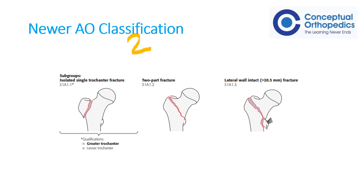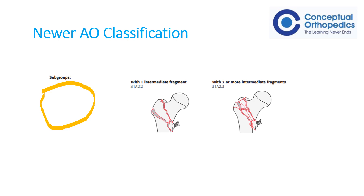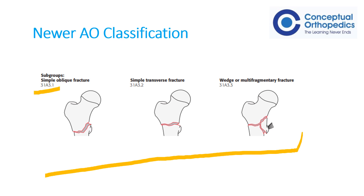The 2018 refined AO classification considers: 31-A1.1 as an isolated fracture of the greater or lesser trochanter; 31-A1.2 as a two-part fracture with a single fracture line; and 31-A1.3 as one fracture line plus a separate lesser trochanter fracture. In A2, there is no A2.1; A2.2 is one fracture line with one intermediate fragment; A2.3 has two or more intermediate fragments. A3 is a reverse oblique fracture: A3.1 is a simple oblique, A3.2 is transverse, and A3.3 is a wedge or multifragmentary reverse oblique fracture.